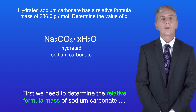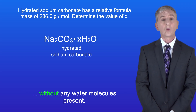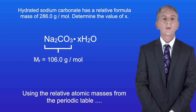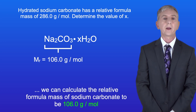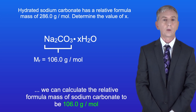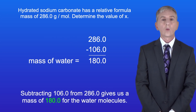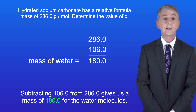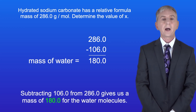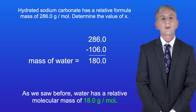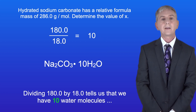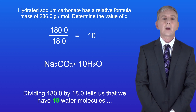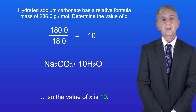First we need to determine the relative formula mass of sodium carbonate without any water molecules present. Using the relative atomic masses from the periodic table we can calculate the relative formula mass of sodium carbonate to be 106.0 grams per mole. Subtracting 106.0 from 286.0 gives us a mass of 180.0 for the water molecules. Water has a relative molecular mass of 18.0 grams per mole. Dividing 180.0 by 18.0 tells us that we've got 10 water molecules, so the value of X is 10.